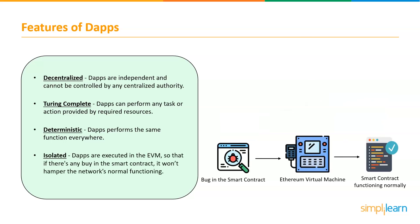And the last one is isolated, which means they are executed in the Ethereum Virtual Machine, a virtual environment, so that if there is any kind of bug in the smart contract, it won't hamper the normal functioning of the Ethereum network.